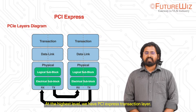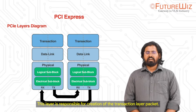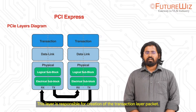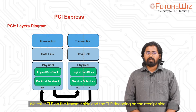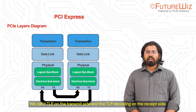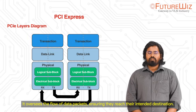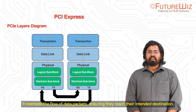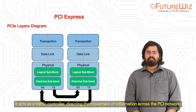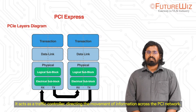The transaction layer is responsible for creation of the Transaction Layer Packet, we call it TLP, on the transmit side and TLP decoding on the receive side. It oversees the flow of data packets, ensuring they reach their intended destination. It acts as a traffic controller, directing the movement of information across the PCI network.